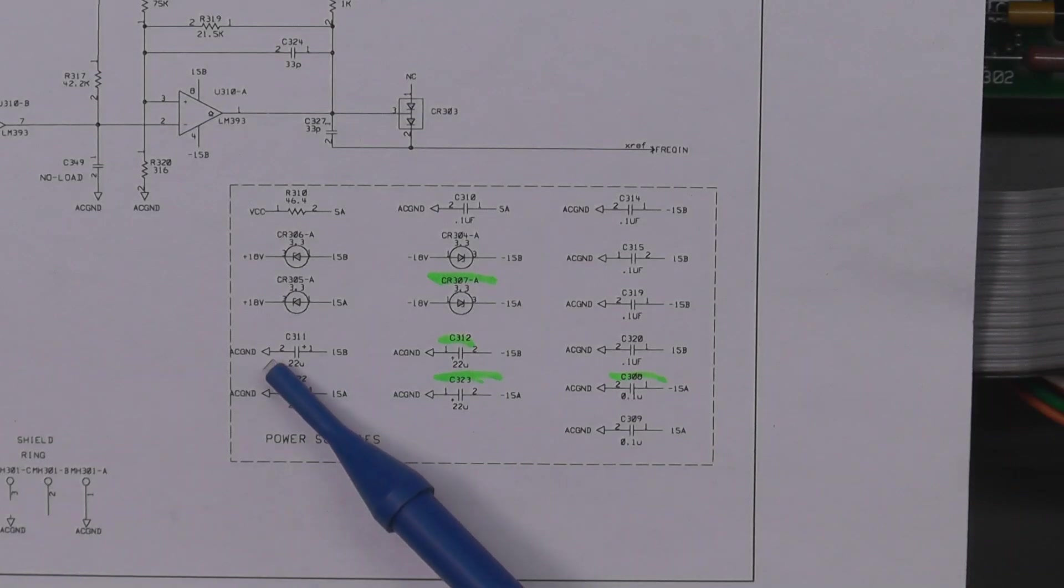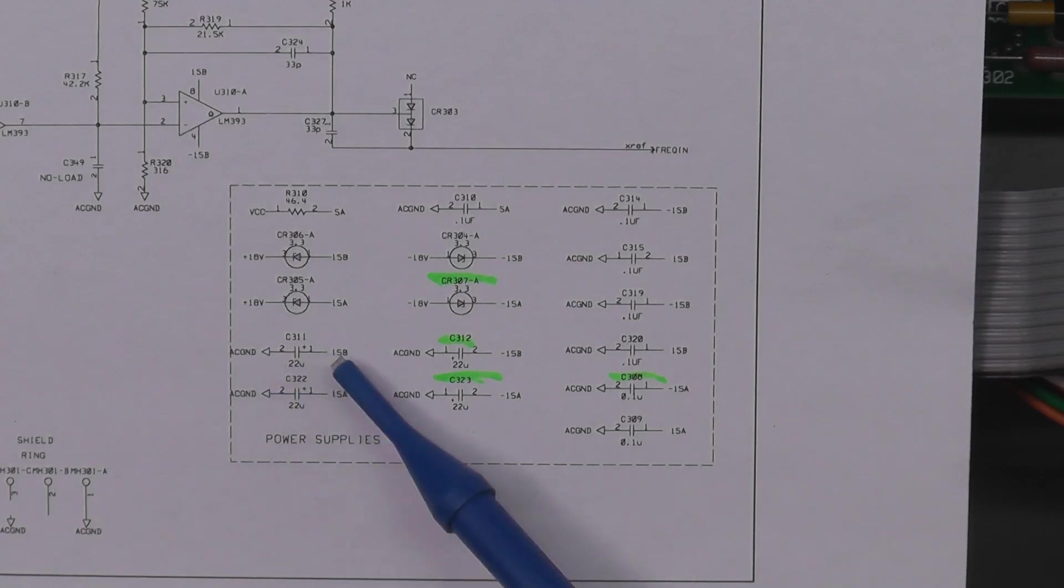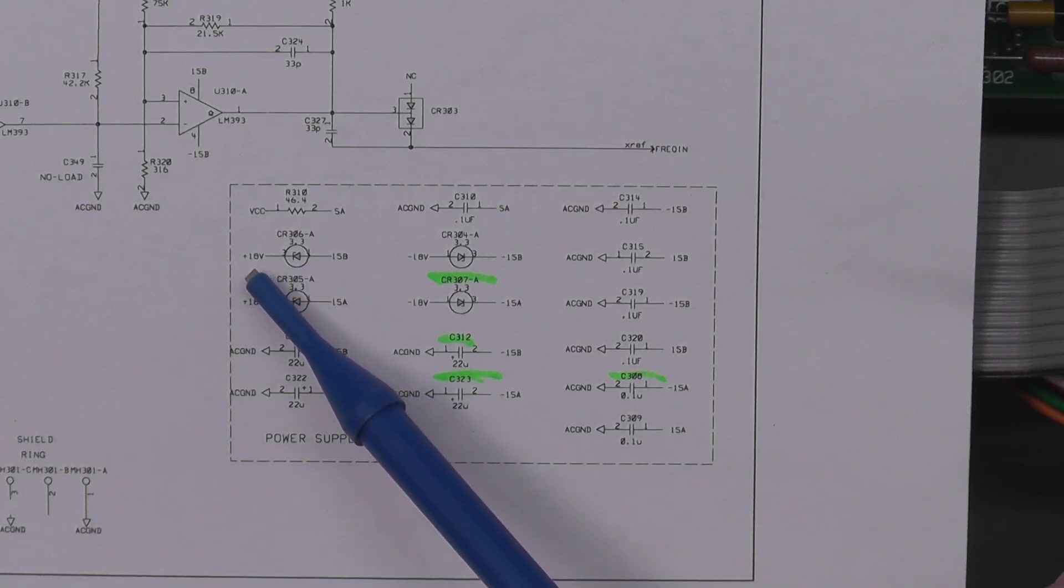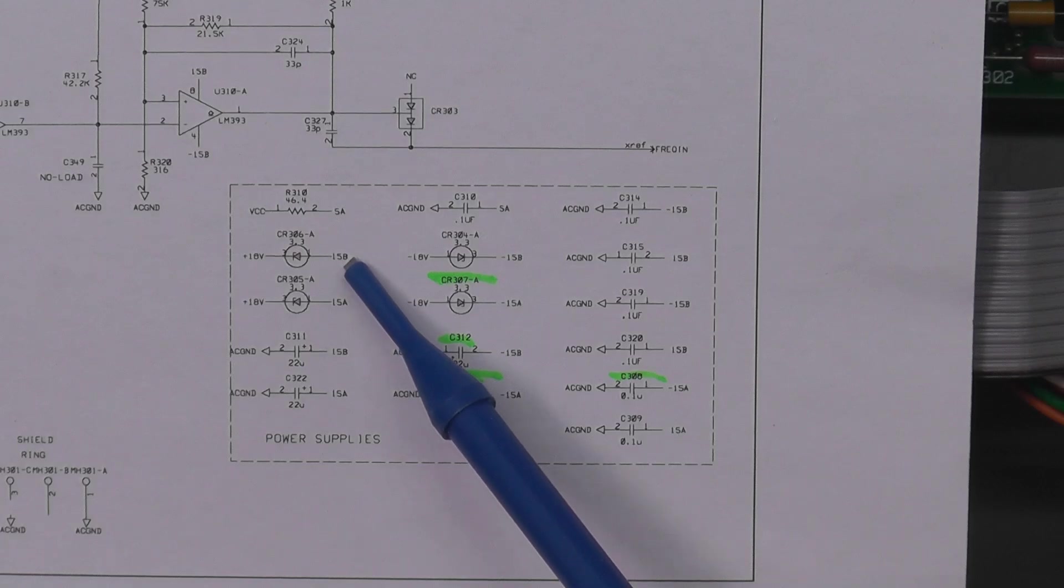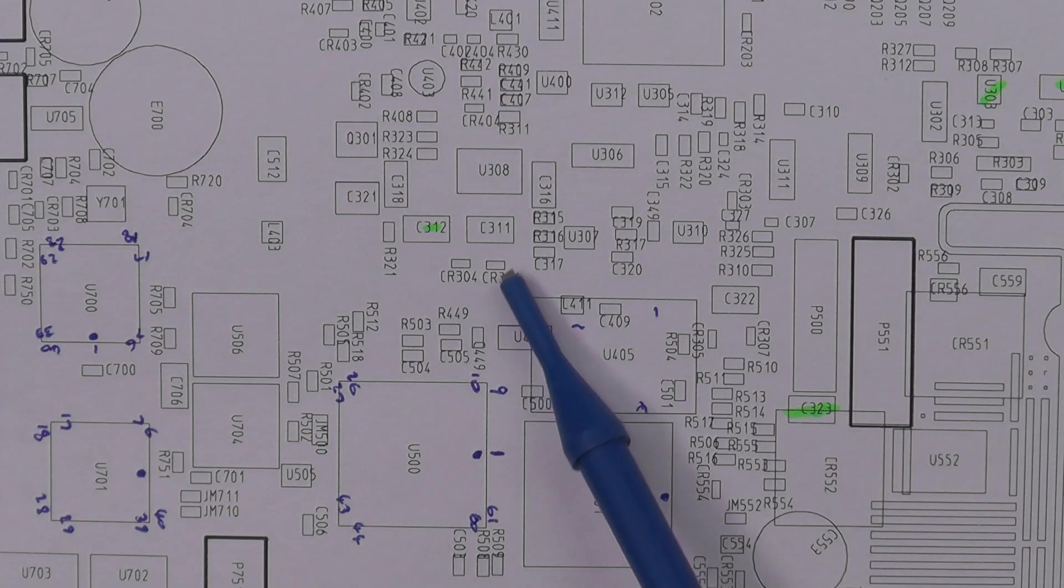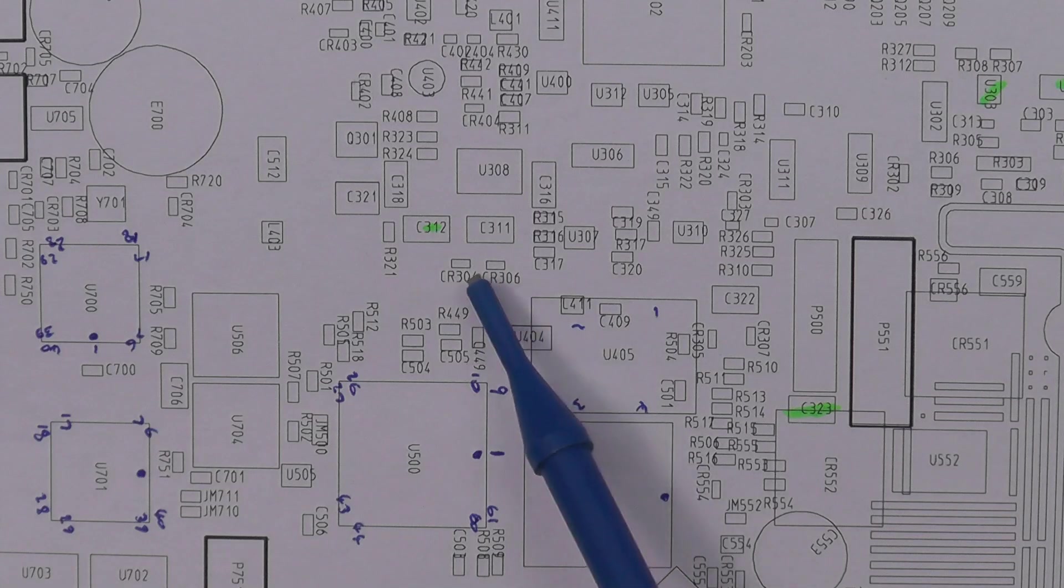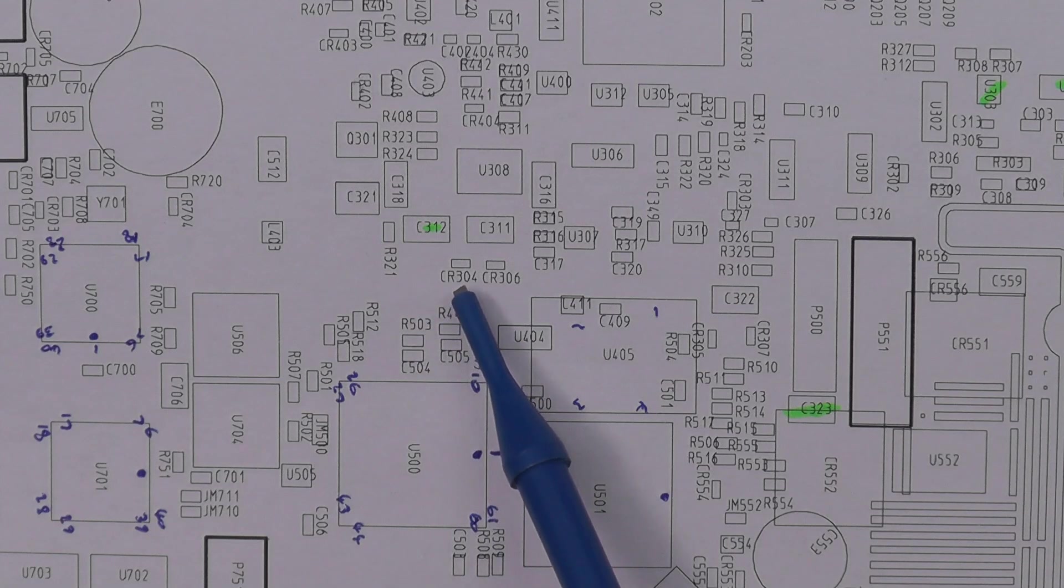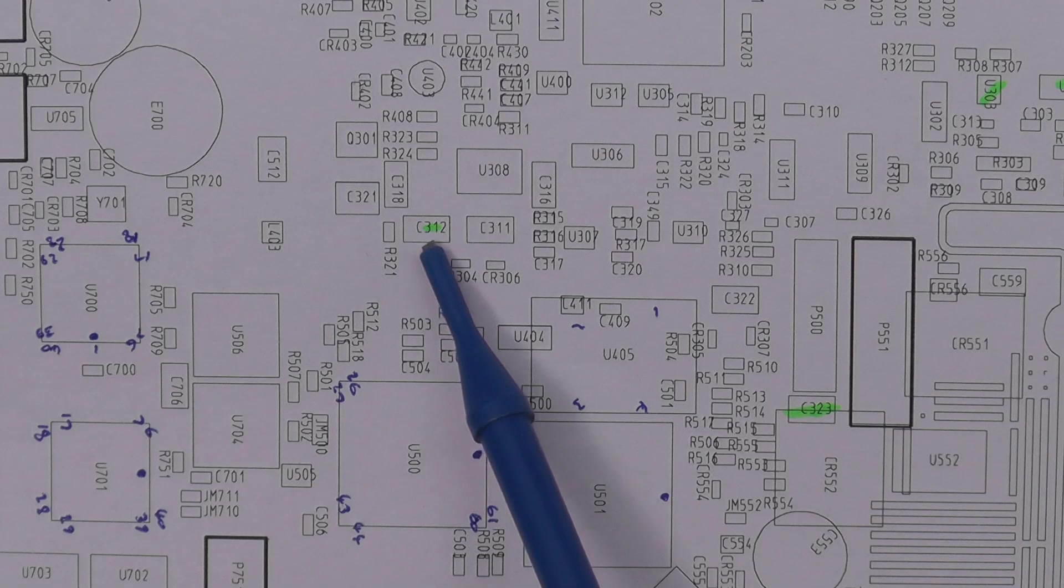That capacitor C311 is across the plus 15 volt rail. The other one's across the minus 15 volt rail, and that one seems okay. Let's trace back where that supply is coming from. C311 is across 15B. If I look over here, we can see a 3.3 volt zener diode which is used as a dropper to bring down the regulated plus 18 volt down to plus 15 volt. That's C306A on the layout, and there is CR306 right next to that capacitor I just changed out. Let's check CR306 zener diode. Easy to test, hopefully in-circuit. I can compare it to CR304, which is on the corresponding negative 15 volt rail.